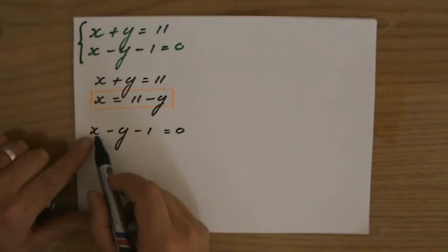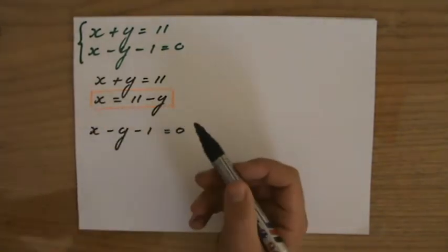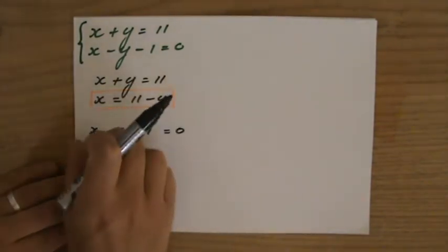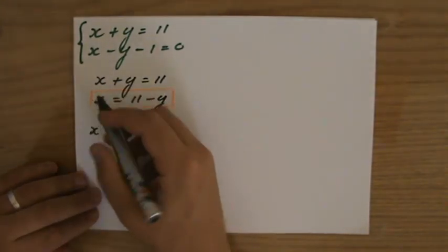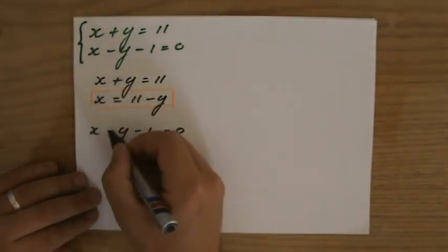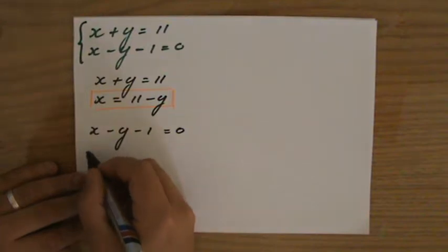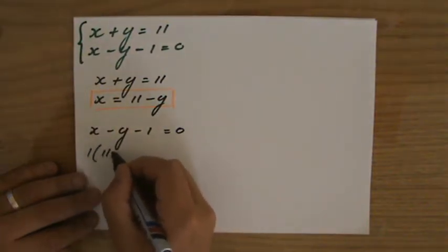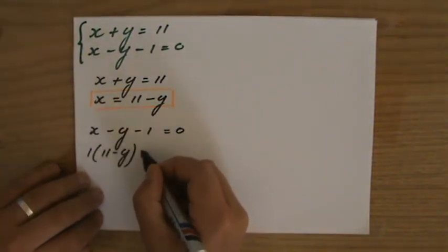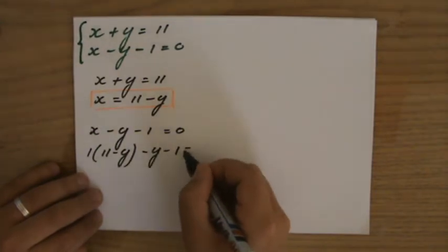Now, I have said that x is 11 minus y. So, I'm going to substitute that information in this equation. So, I'm going to swap the x for 1x for 1 times 11 minus y. Minus y minus 1 equals 0.